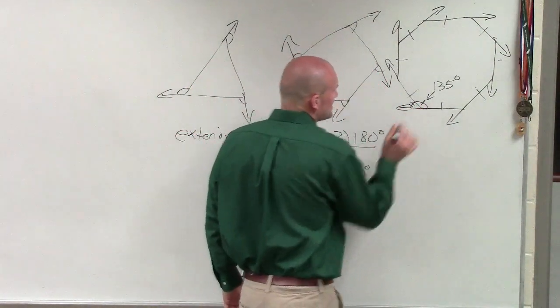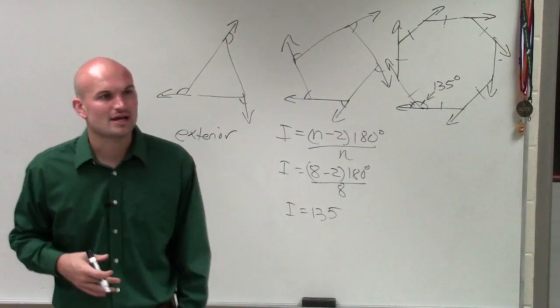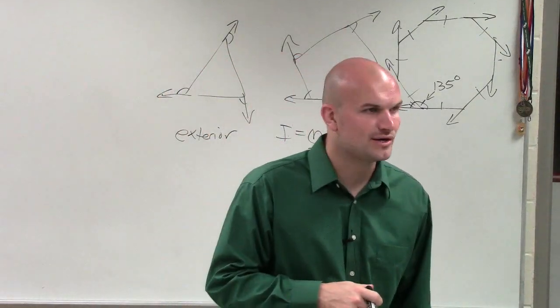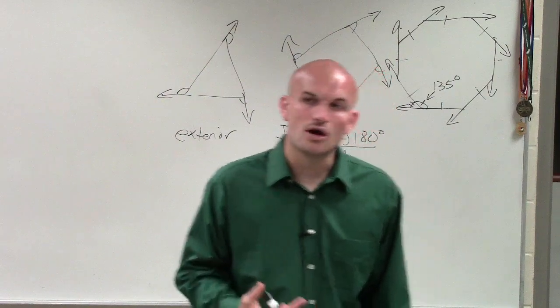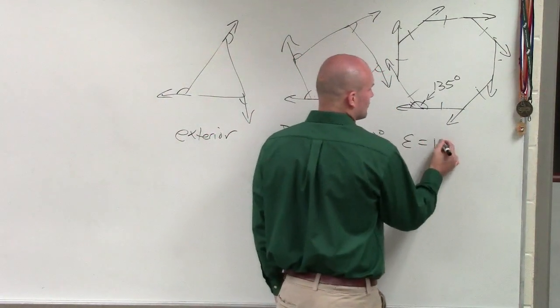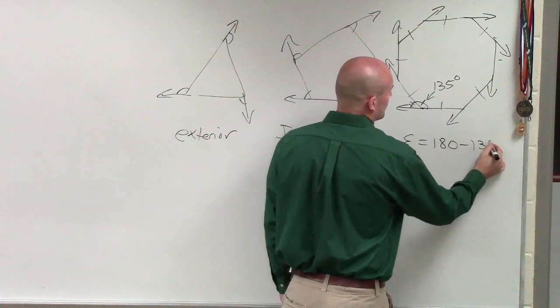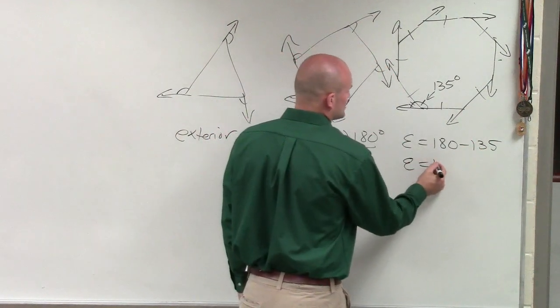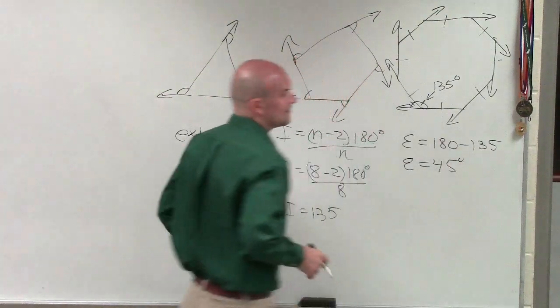But as I previously mentioned, the interior angle and the exterior angle are what we call supplementary. So therefore, I need to now take, to find the exterior angle, I need to take 180 minus 135. So my exterior angle is equal to 45 degrees.